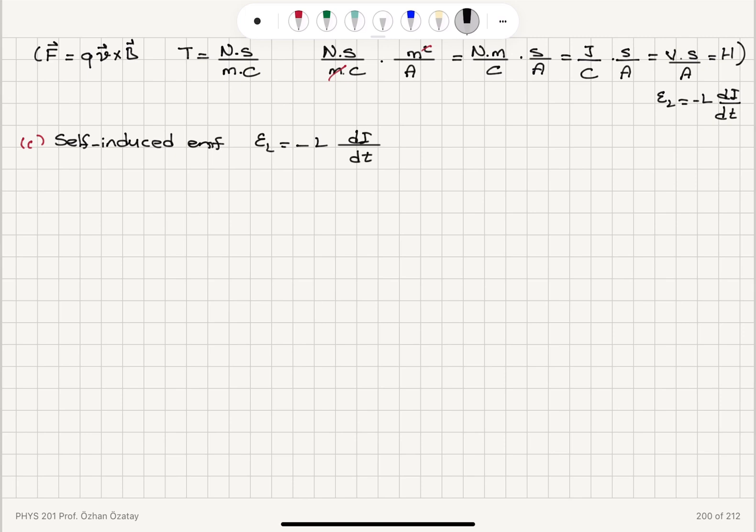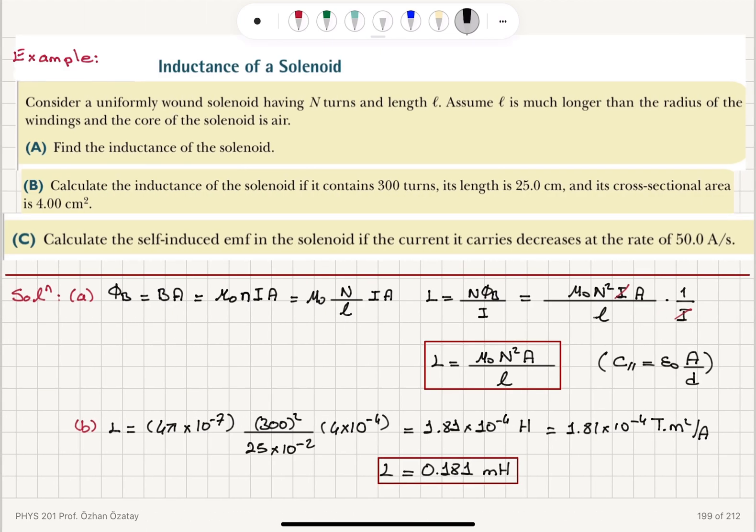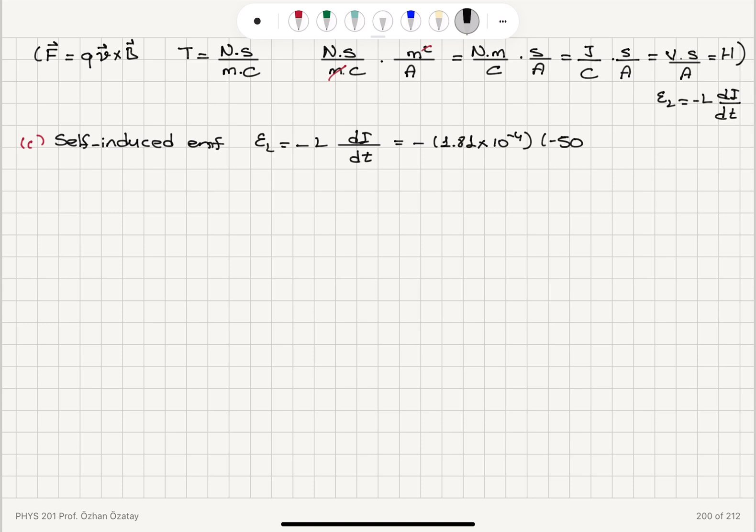we have epsilon equals minus L di dt. And the inductance we have found, 1.81 times 10 to minus 4 Henry. The current is decreasing. So the derivative is negative, 50 amperes per second. So it's minus 50. And this gives us for the induced, self-induced EMF, 9.05 milli volts.